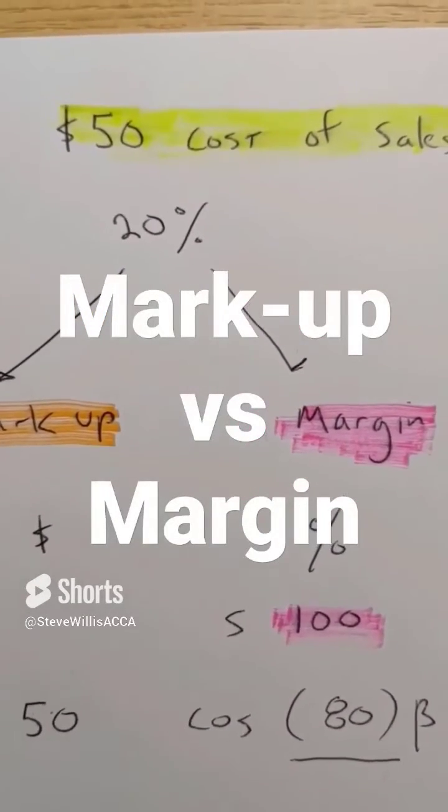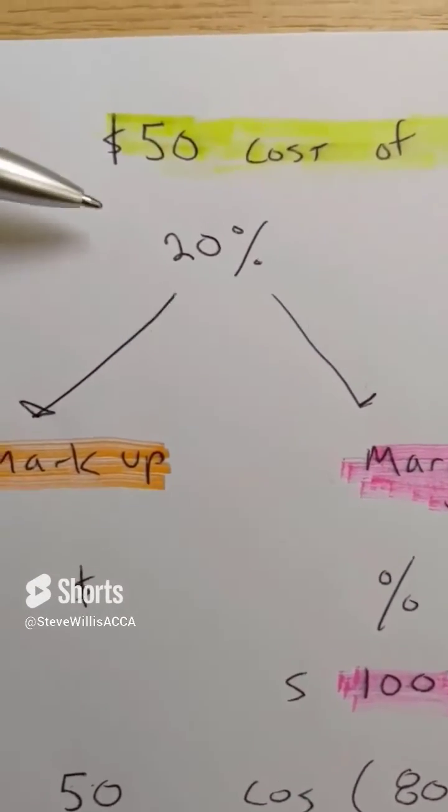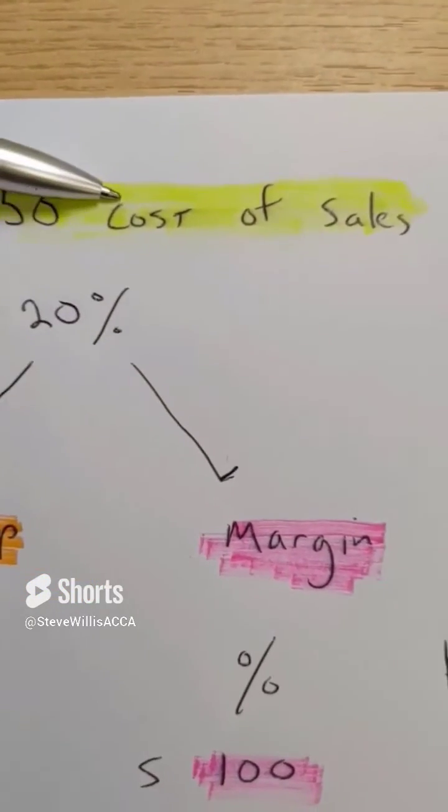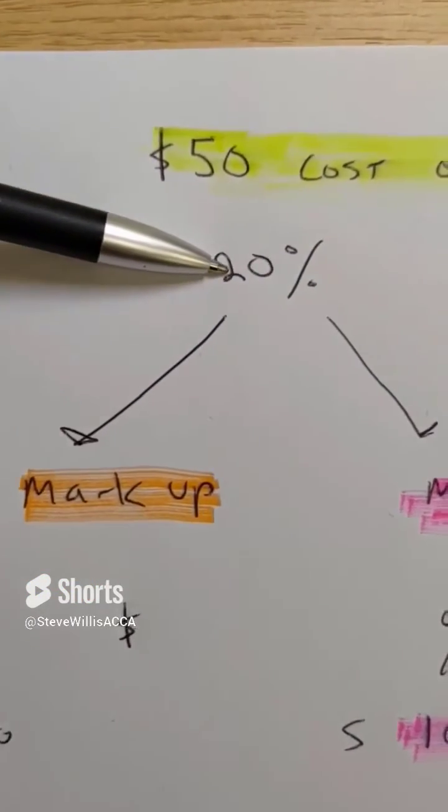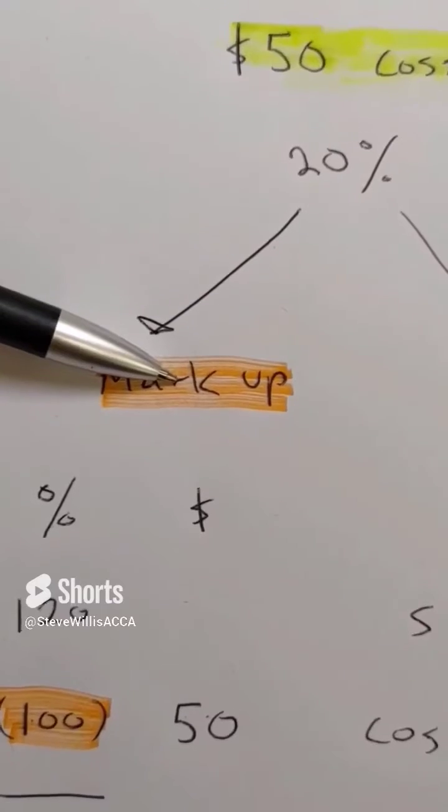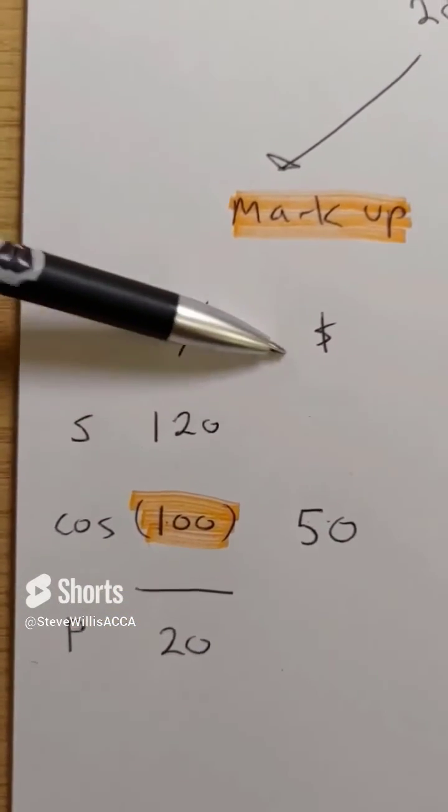Let's compare a markup to a profit margin. We've got $50 cost of sales, 20% markup. Draw this table.